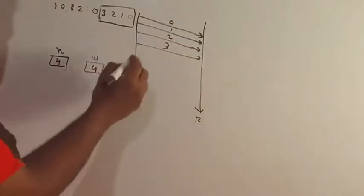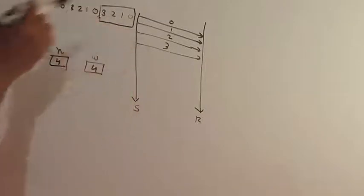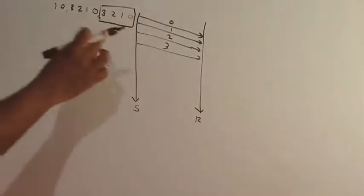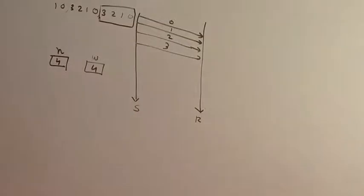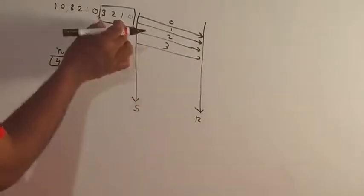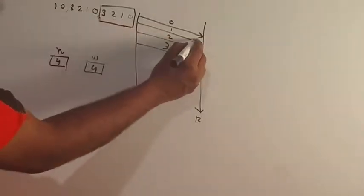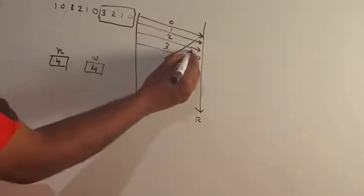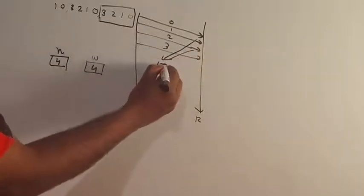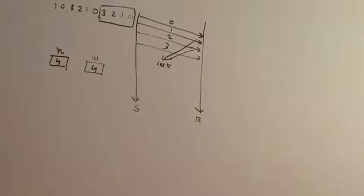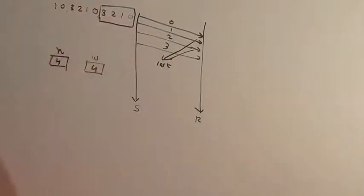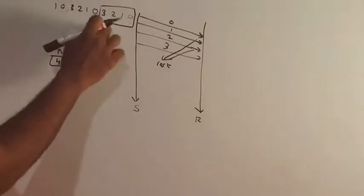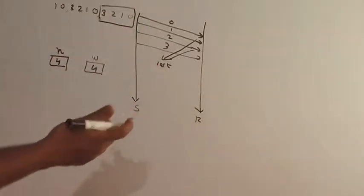We will have to send two frames in the background. We will have to send the first frame. If you are using this window, you can respond to the second file. Then we will have to close this file. If we are using this file, we will show you the next file. Now, if we are using this file, we will have to close it.